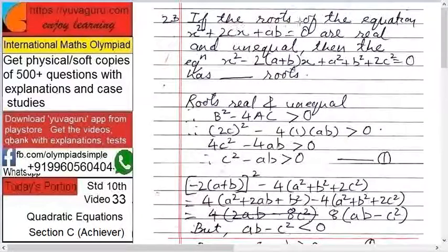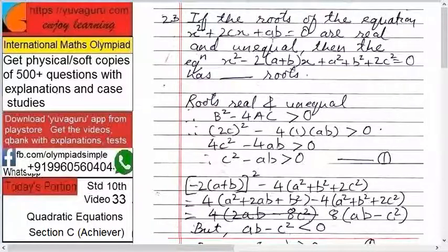Next, if the roots of an equation x squared plus 2cx plus ab equals to 0 are real and unequal. Then, the equation x squared minus 2 into a plus b into x plus a squared plus b squared plus 2c squared equals to 0 has dash roots, means real or imaginary. So, what is given? Roots are real and unequal.